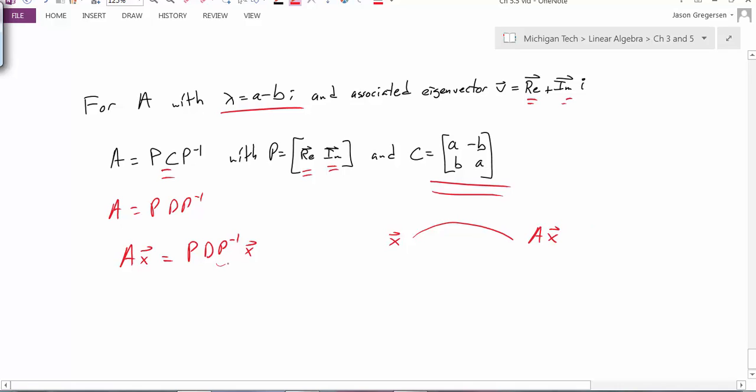it's really the same thing as first changing the basis by multiplying by the P inverse, now we'll get our vector in terms of this new basis, and then we apply our transformation D, which is much easier to recognize because it's diagonal to get to some other value, and then we multiply by P to change our basis back, and we're going to end up in that same place.